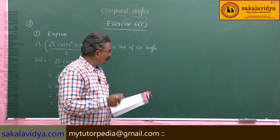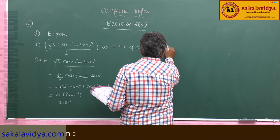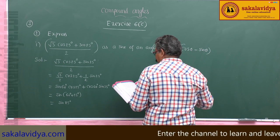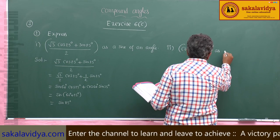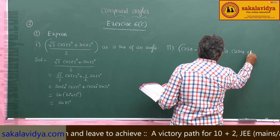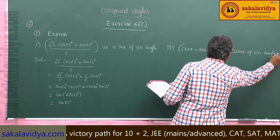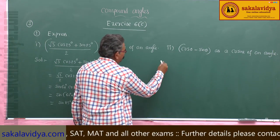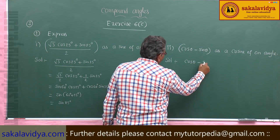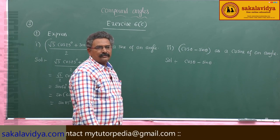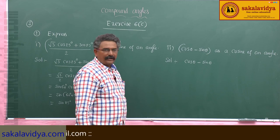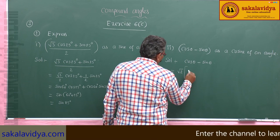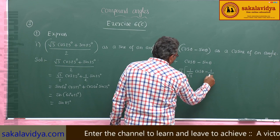Second bit: express cos θ minus sin θ as a cosine of an angle. Consider cos θ minus sin θ. Multiply and divide by root 2. So we can write this as root 2 times (1 by root 2 · cos θ minus 1 by root 2 · sin θ).